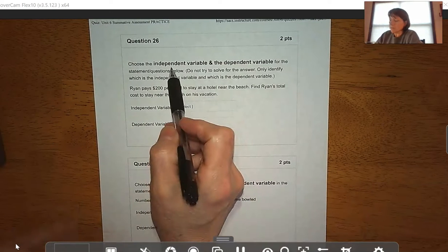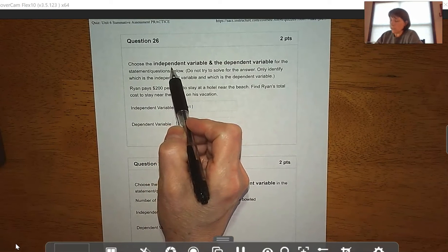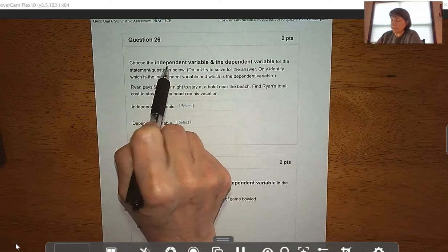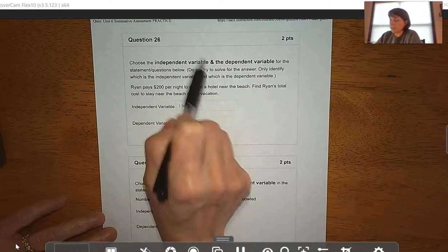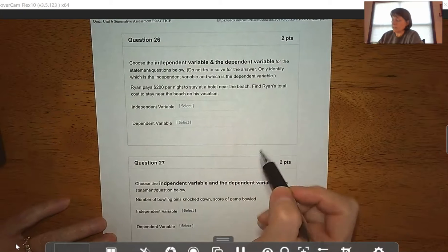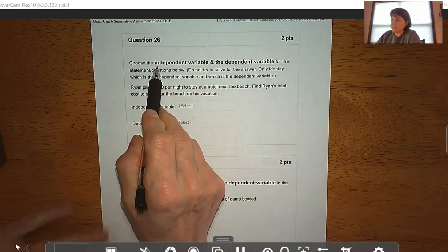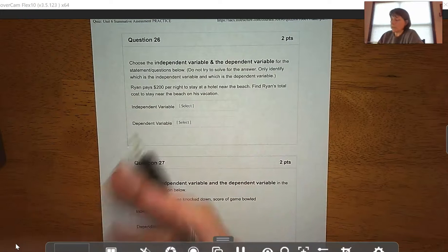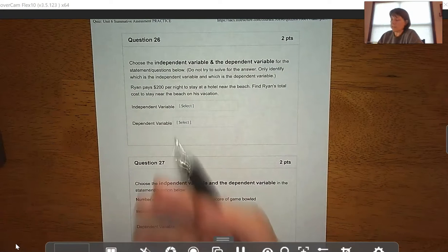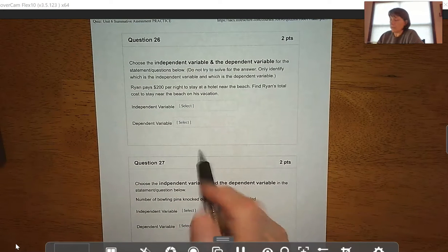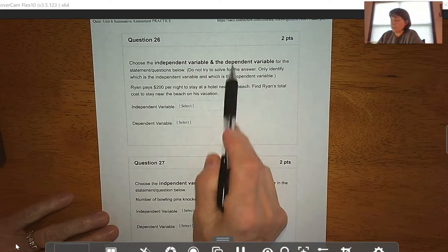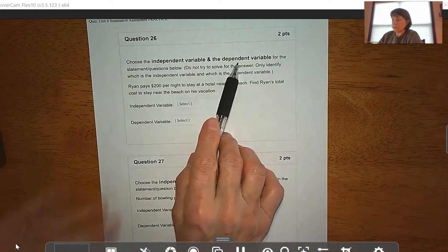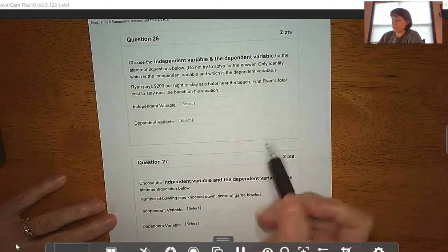So remember, the independent variable is the one we choose, and the dependent variable depends on what happens with the independent variable. I like to think of the independent variable like I'm free to choose - I'm free to stay at my resort as many days as I want to, or rent my car as many days as I want to, and that determines my cost. The dependent variable depends on the independent variable.